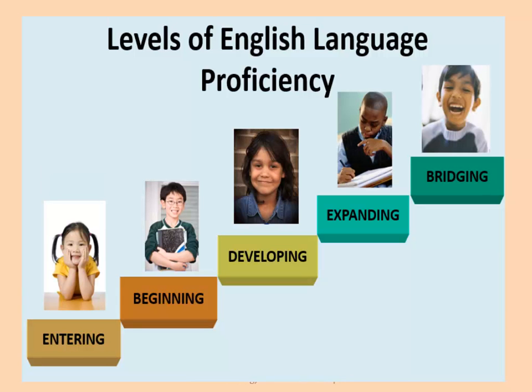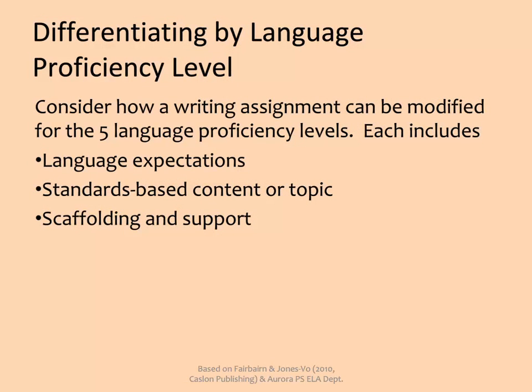This is what differentiation by language proficiency level is all about. Proficiency level differentiation is doing different things for students at different levels of language proficiency. Following is an example of the differentiation of a writing assignment for each of the five proficiency levels. Each level includes language expectations, the standards-based topic, and the scaffolding and support that will be provided to students at each level. The purpose of this example is to give you a sense of the process.